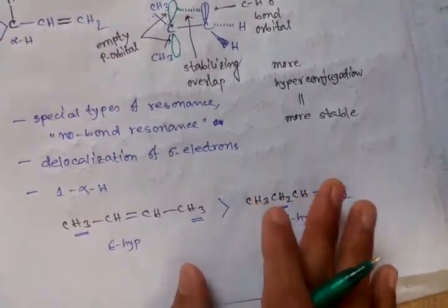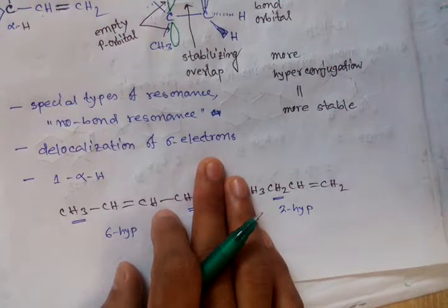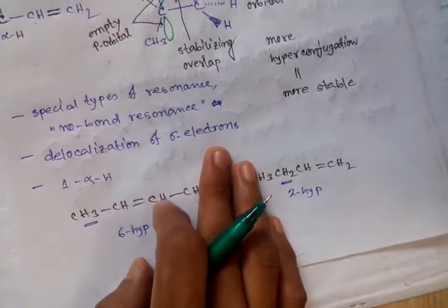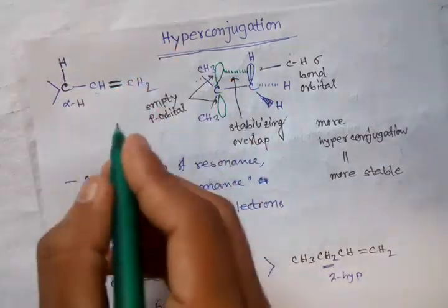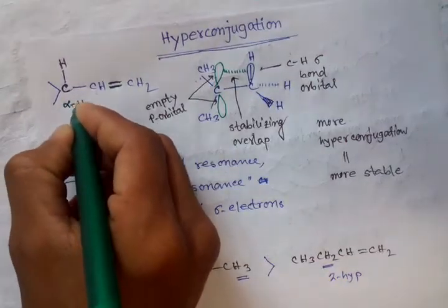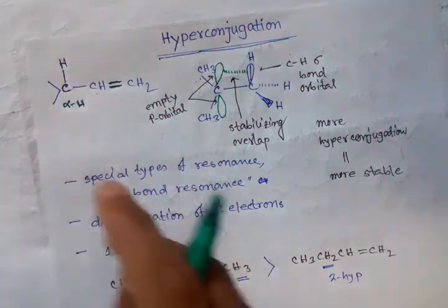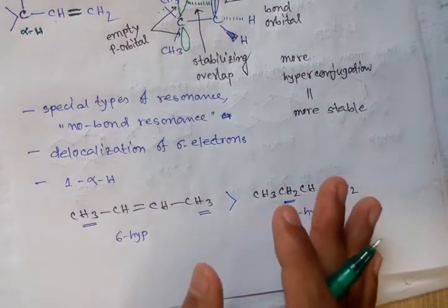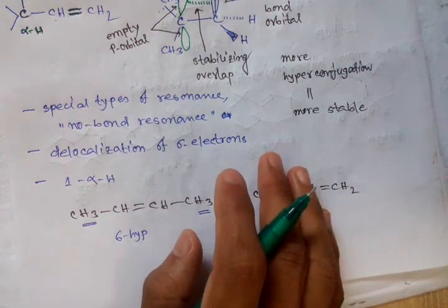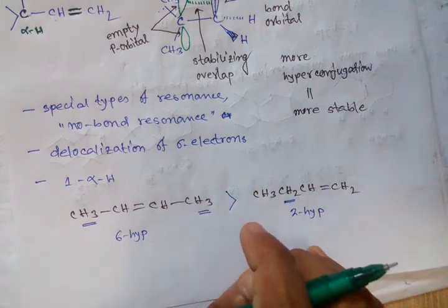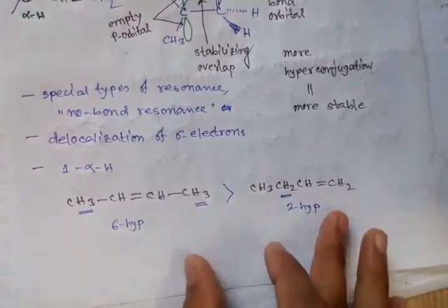In hyperconjugation, only sigma bond electrons are considered — pi electrons are not considered. The condition for hyperconjugation is that a minimum of one alpha hydrogen must be present in the system. Hyperconjugation is a technique to identify whether a molecule is more stable or less stable. Thanks for watching.